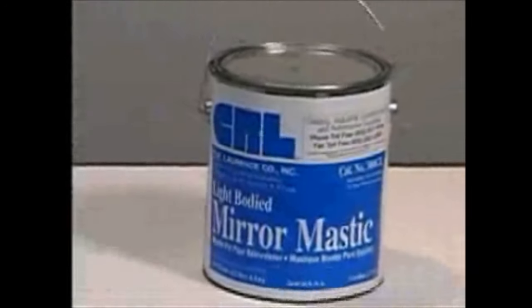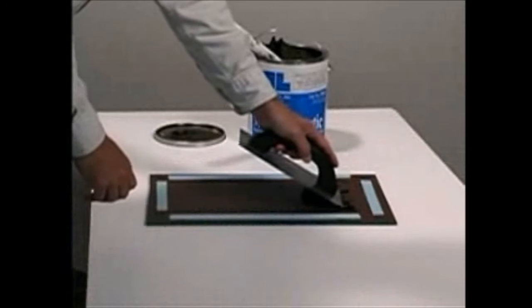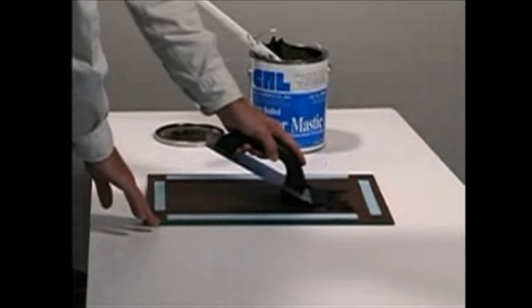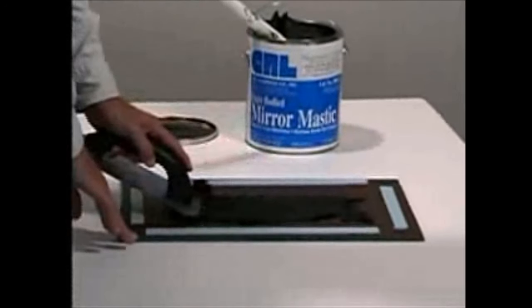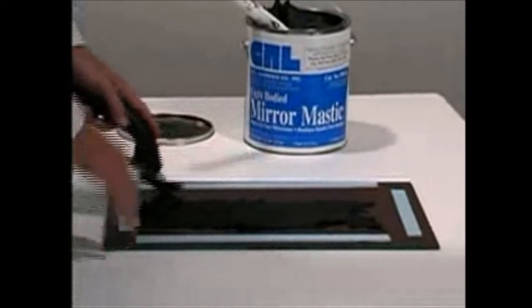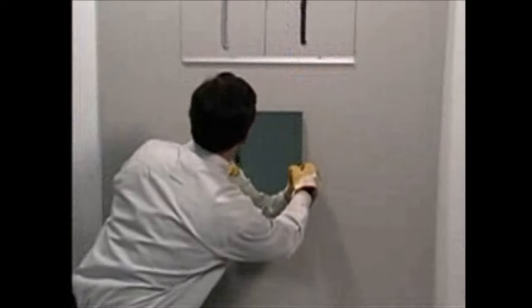CRL light-bodied mirror mastic is a top-quality adhesive. Use it to coat an entire mirror backing to hold pieces together in case of breakage. Use with double-sided mirror mounting tape for small mirror installations, or with J-channel with mirror clips for larger mirror installations. Light-bodied mirror mastic is not for use with heavy mirrors or in overhead installations.